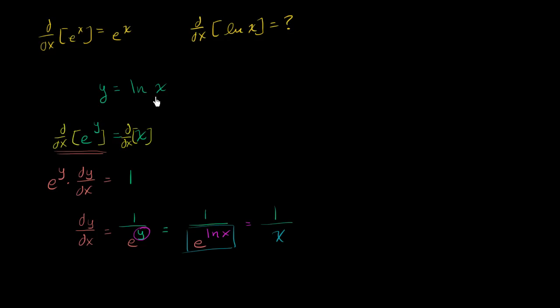We just figured out if y is equal to the natural log of x, the derivative of y with respect to x is 1 over x. Or you could say the derivative of natural log of x with respect to x is equal to 1 over x. So this is equal to, this right over here is equal to 1 over x, which is also a pretty neat result in mathematics. Not quite as exciting as this one, but still pretty neat.